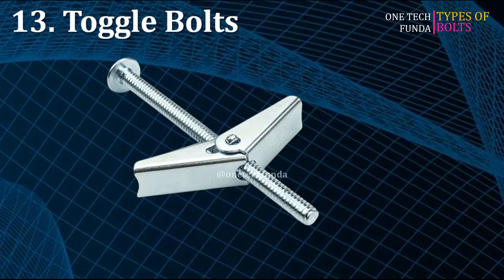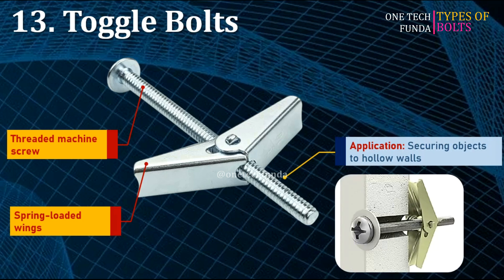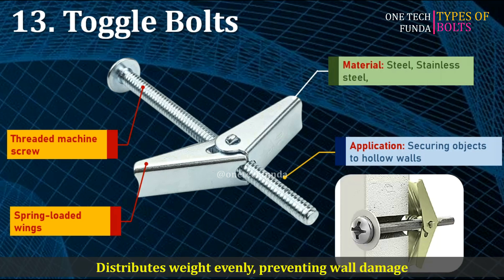Toggle bolts are threaded machine screws with spring-loaded wings that expand. Ideal for securing objects to hollow walls. Materials include steel and stainless steel. The main advantage is they distribute weight evenly, preventing wall damage.